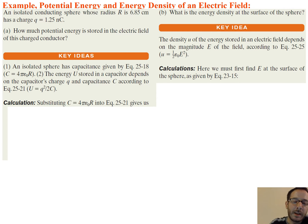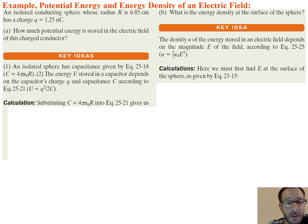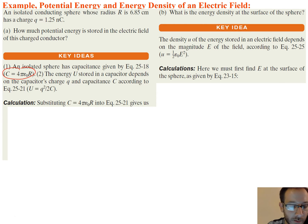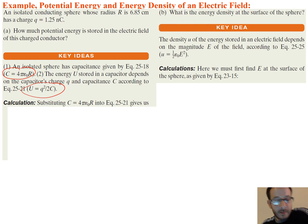So let's go ahead and do an example. An isolated conducting sphere whose radius R is 6.85 centimeters has a charge Q equal to 1.25 nanocoulombs. How much potential energy is stored in the electric field of this charged conductor? An isolated sphere has a capacitance given by the equation we've seen earlier. The potential energy U stored in the capacitor depends on the capacitor's charge Q and capacitance C according to the equation we just found. So we're going to take our first equation and substitute that into the second.